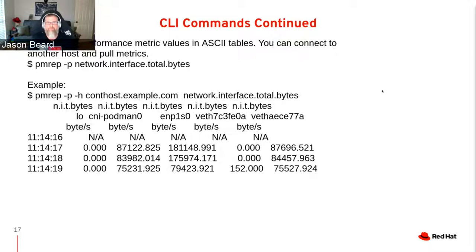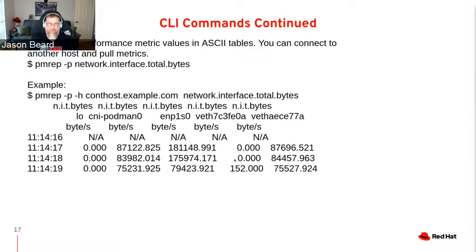PMREP is a metrics reporter. The -P flag is for timestamps. You can add in another host with -H. PMREP is nice because you can add in more metrics at one time — for example, network interface total bytes, disk, kernel load — you can add several at once to see them all at the same time. This also runs against archives. PM val is one of the earlier commands shipped with Performance Copilot. It's still available — it's part of even a minimum install. You have -T for interval, -S for sampling, and you can also run it against archive files.